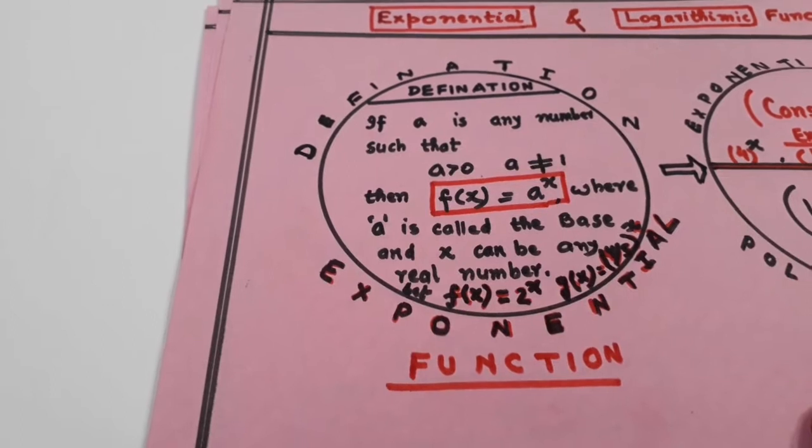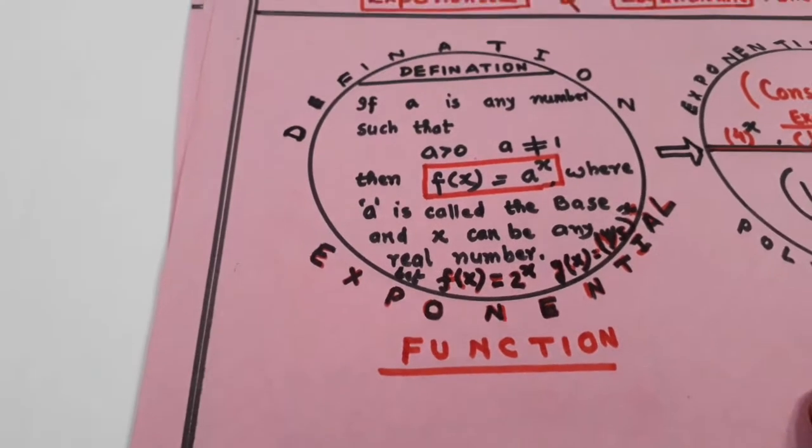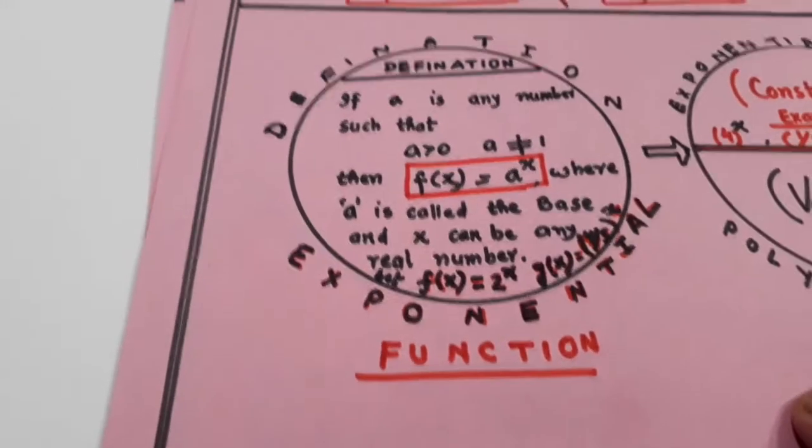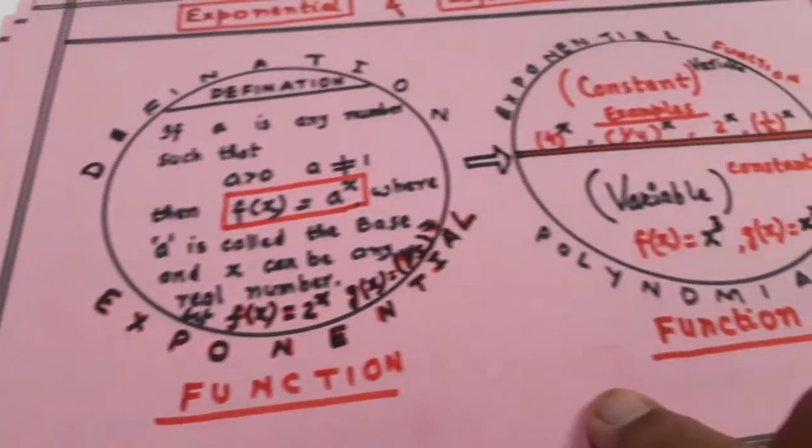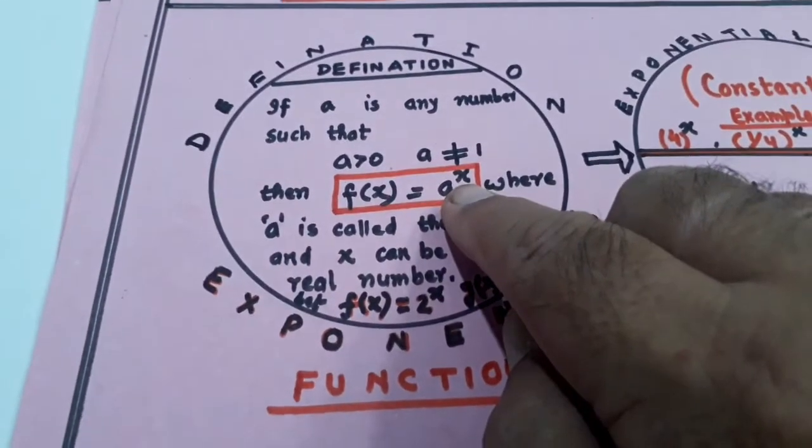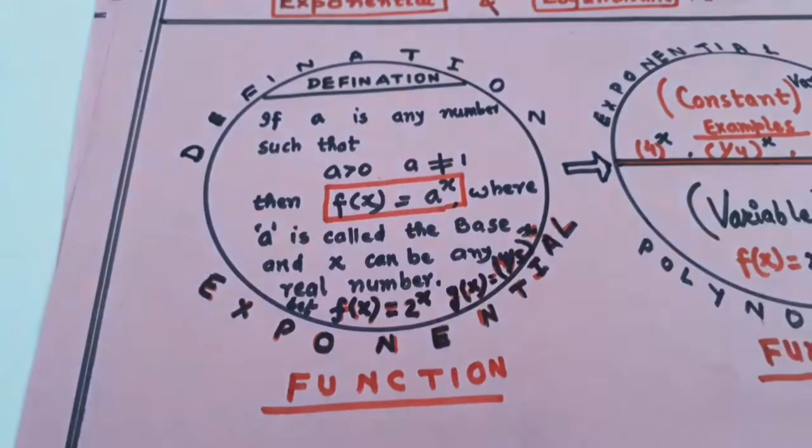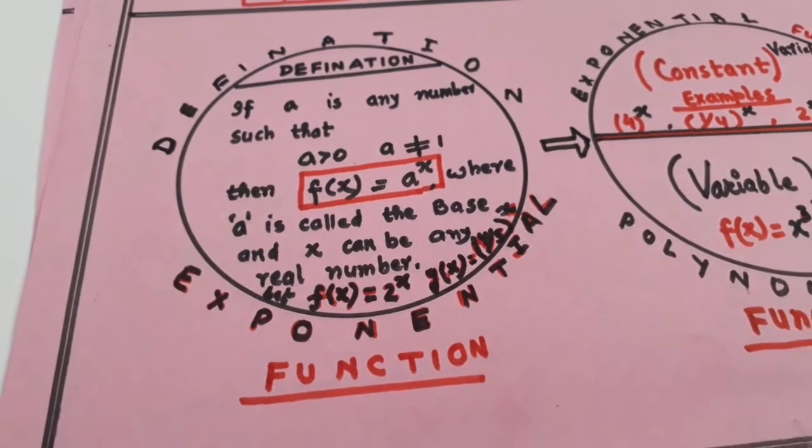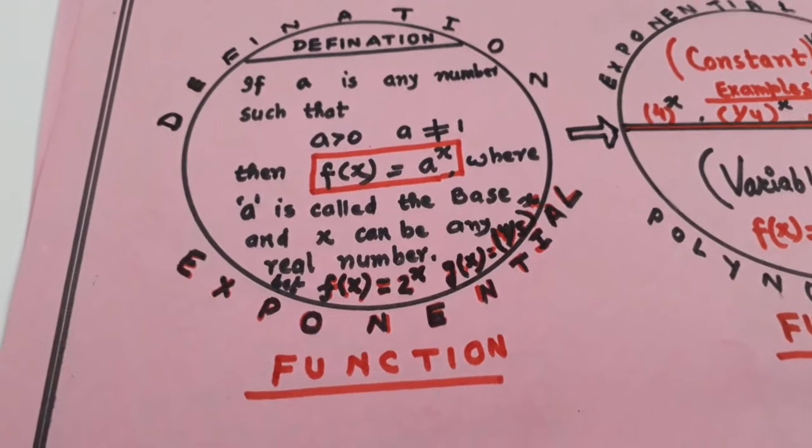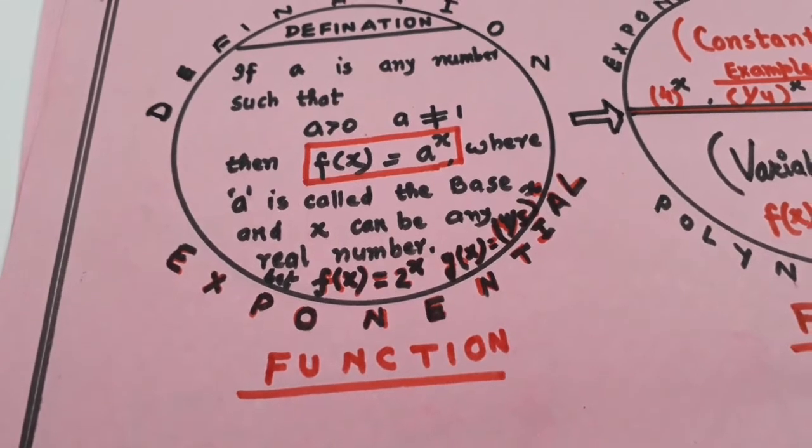If a is any number such that a is positive and not equal to 1, then f(x) is equal to a raised to power x. In case of exponential function, variable oopar hota hai, constant neeche hota hai. Just as e raised to power x, e is a constant. X is a variable. Same way here also, a raised to power x is a variable. A is called the base and x can be any real number.